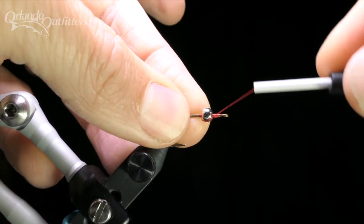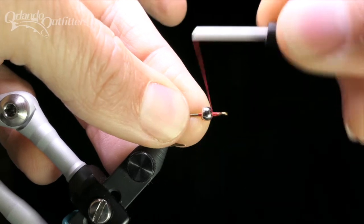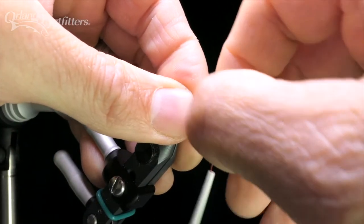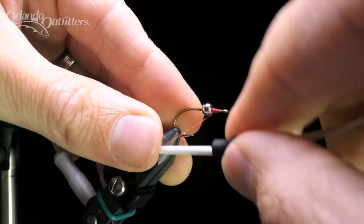Make a couple locking wraps, cross back over, add some locking wraps on the other side, then do it again. If needed, adjust the bead so the spot where the wraps cross over is in line with the hook point.